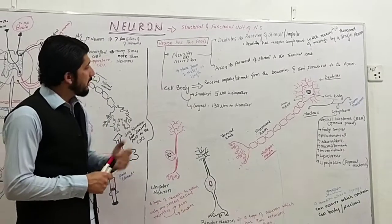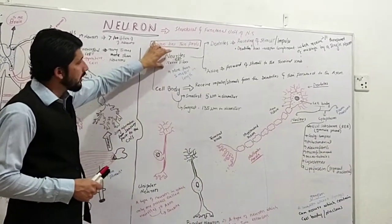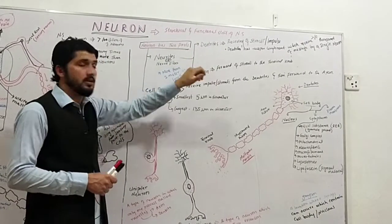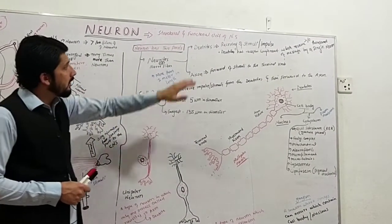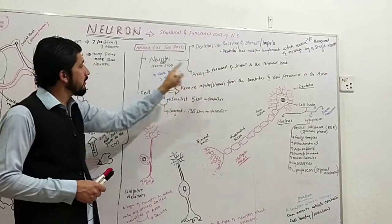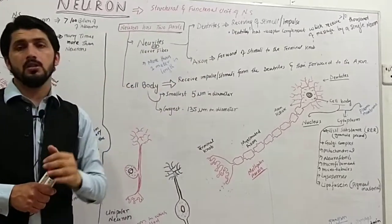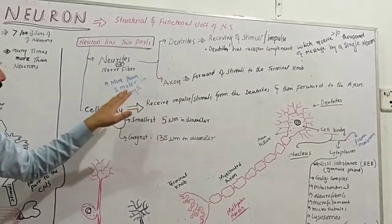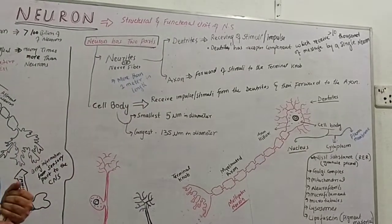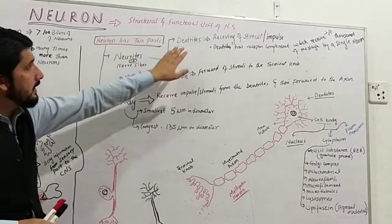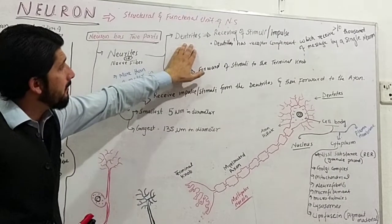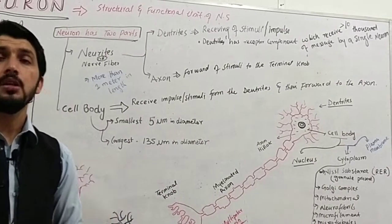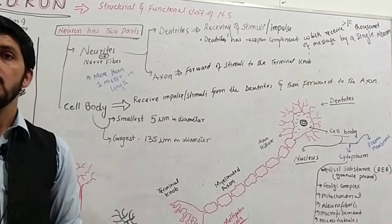The neurite is composed of dendrites and axons. This is a typical diagram of the neuron. The dendrites and axons can be more than one meter in length. The function of the dendrites is the receiving of stimuli, information, or impulse.